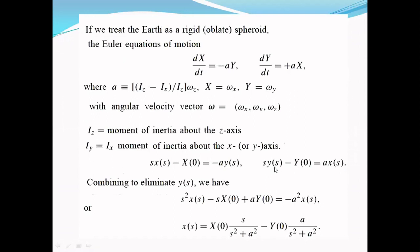Similarly, from the second equation, we have to find Y(s). For that, rearranging the first equation in terms of X(s). Therefore, X(s) = [-aY(s) + X(0)]/s.